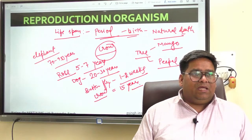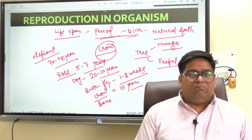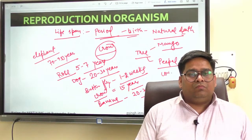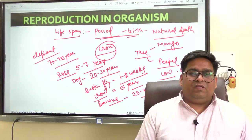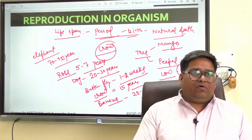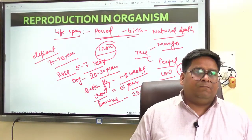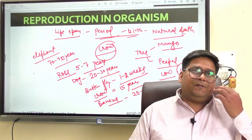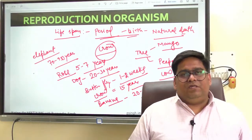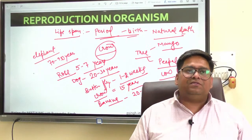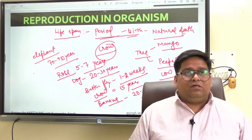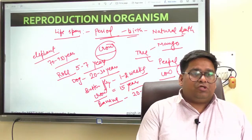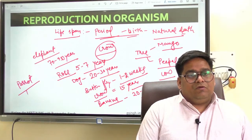The banana tree has a life span of around 20 to 25 years. The cow has a life span of around 15 to 25 years. We talk in terms of range because their life varies geographically — just like life expectancy varies geographically. In developed countries, life expectancy is higher; in developing or underdeveloped countries, life expectancy is comparatively much lower. The parrot has a life span of 140 years. The crocodile is around 60 years.